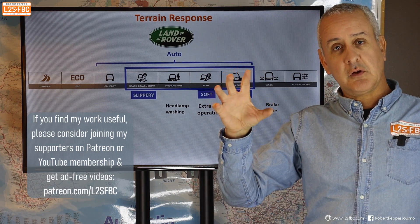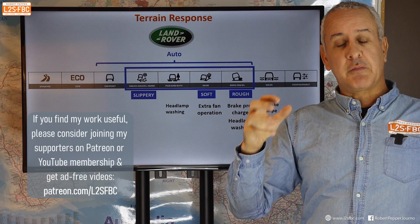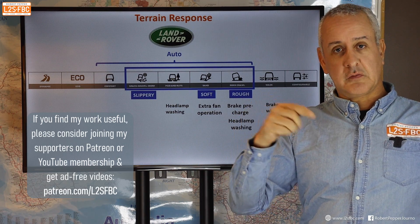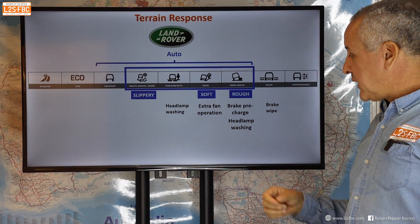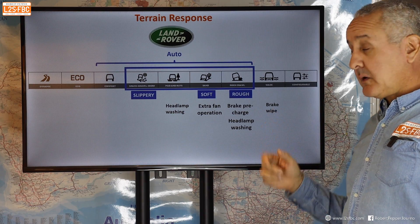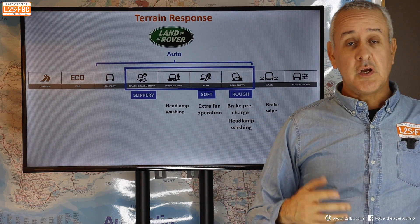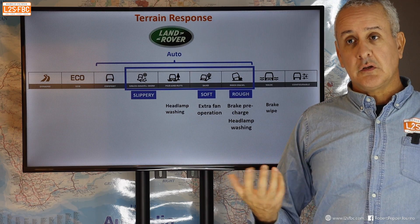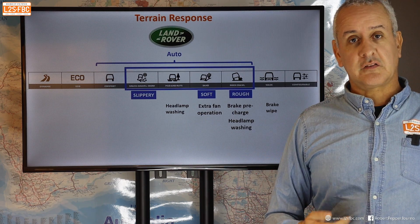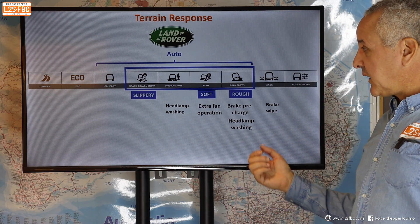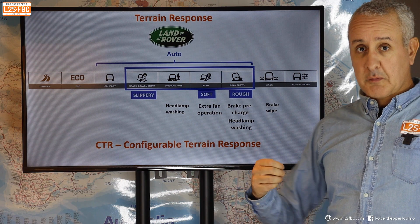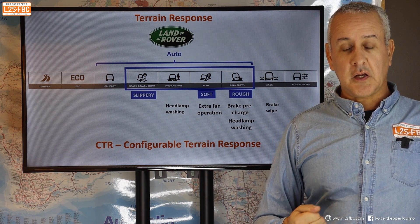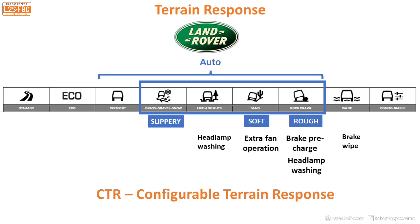There's also a brake pre-charge: when a wheel comes off a rock, the brake is applied preemptively to stop it spinning up. In wading mode, the brakes are automatically wiped after you exit the water — if your car doesn't do that, just do a little left-foot braking when you exit. Configurable Terrain Response, which puts some of these settings under user control, will be covered in another video.